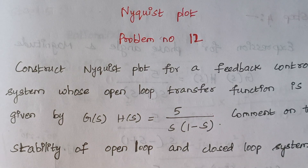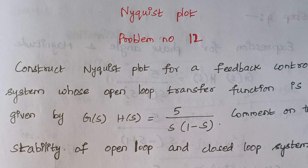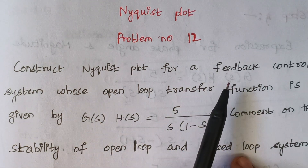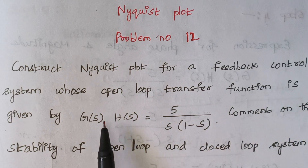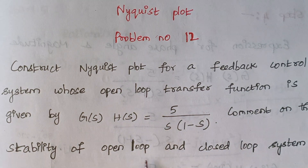Hello viewers, I am Kausalya. Today we are going to solve problem number 12 under the topic Nyquist plot. The problem is to construct a Nyquist plot for a feedback control system whose open loop transfer function is given. We also need to comment on the stability of the open loop and closed loop system.